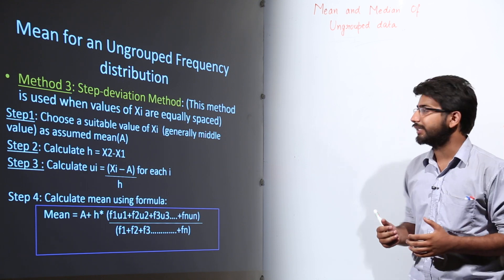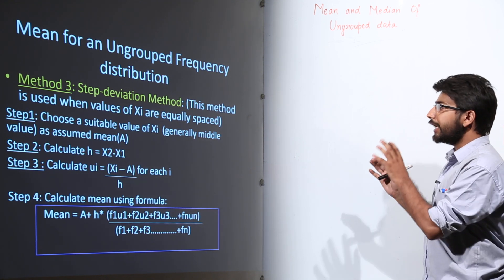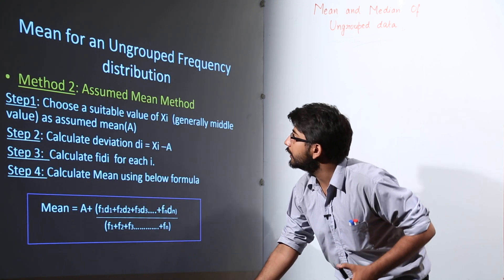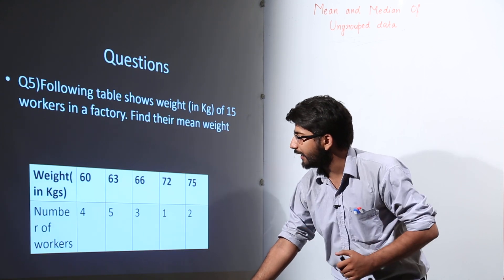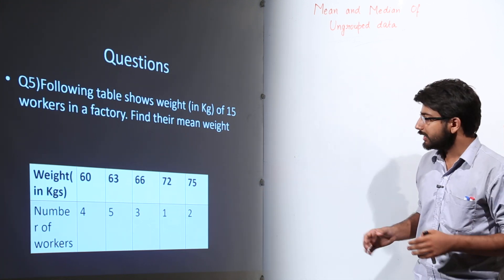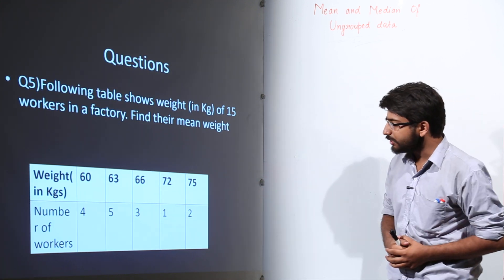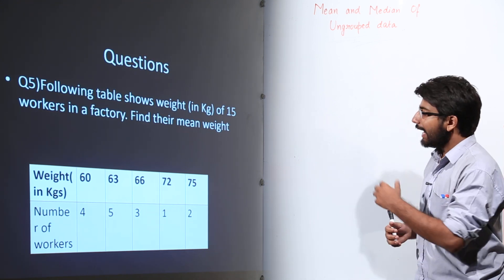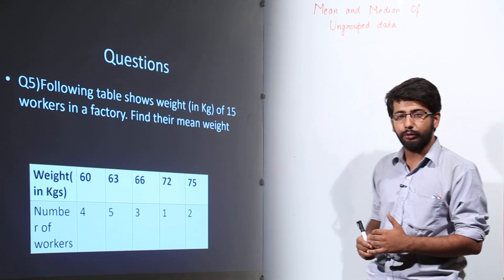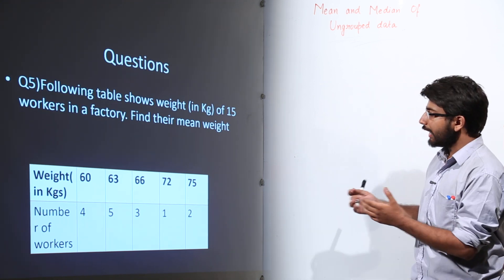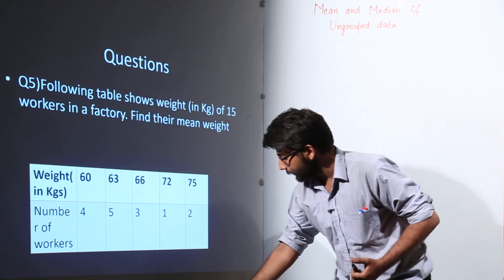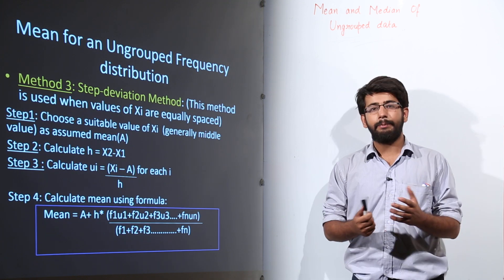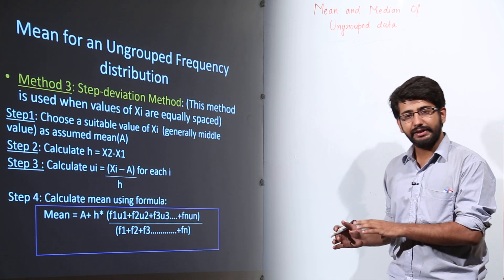A very important thing to remember is that this method can only be used when the values of XIs are equally spaced. In question number 5, we can't use this method because the XIs are not equally spaced — the difference between the first and second value is 3 (63 and 60), while the difference between the third and fourth value is 6.